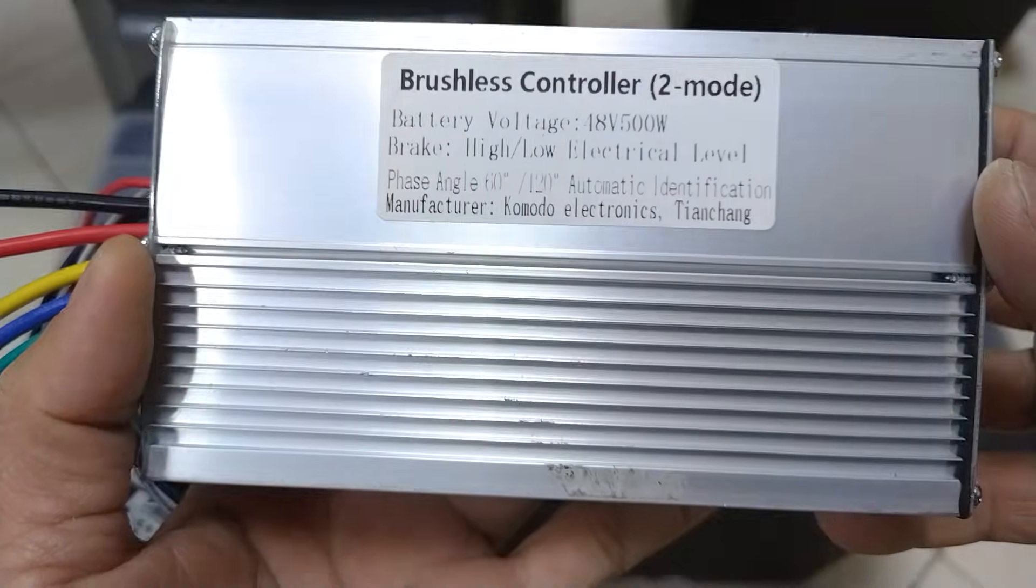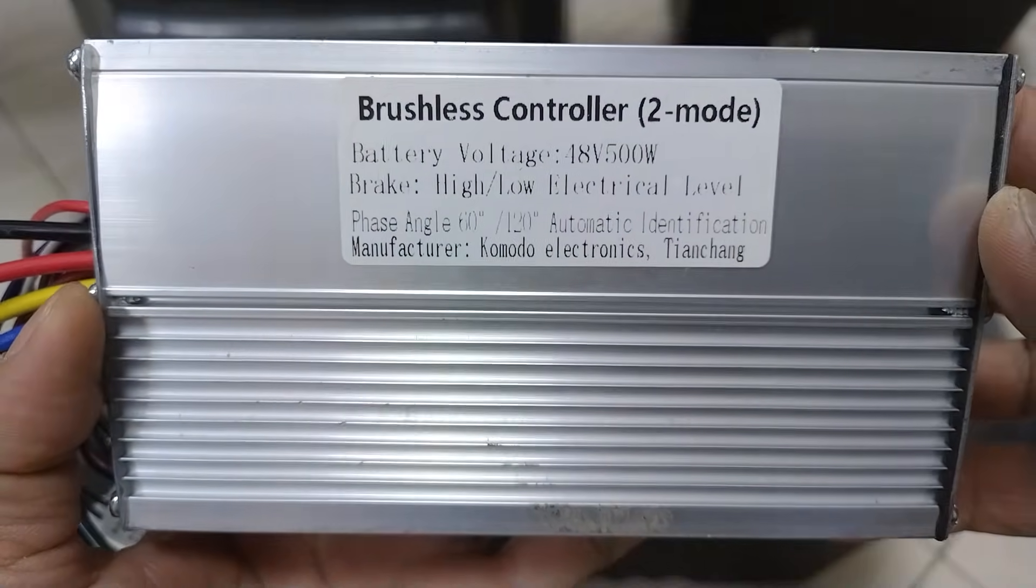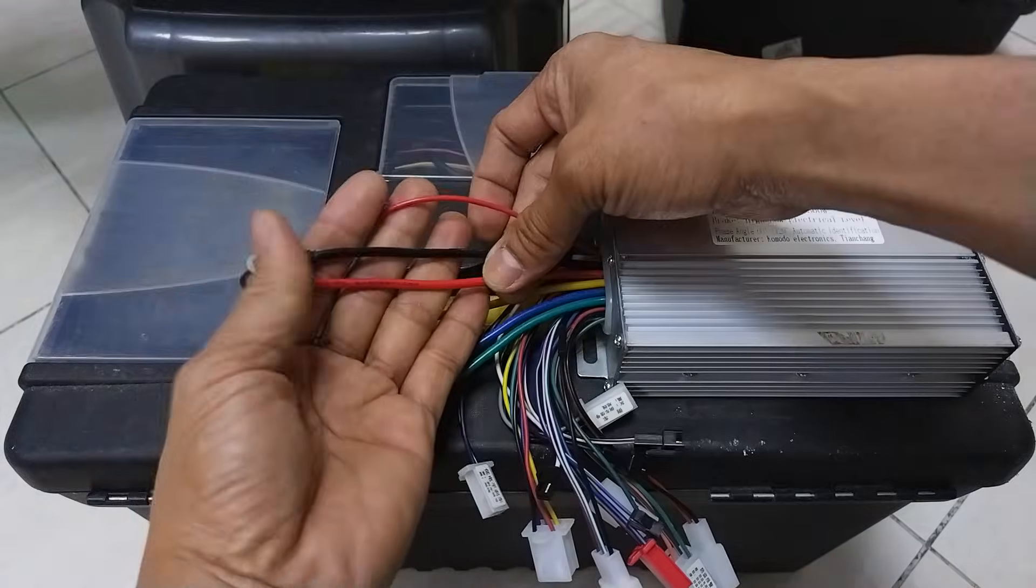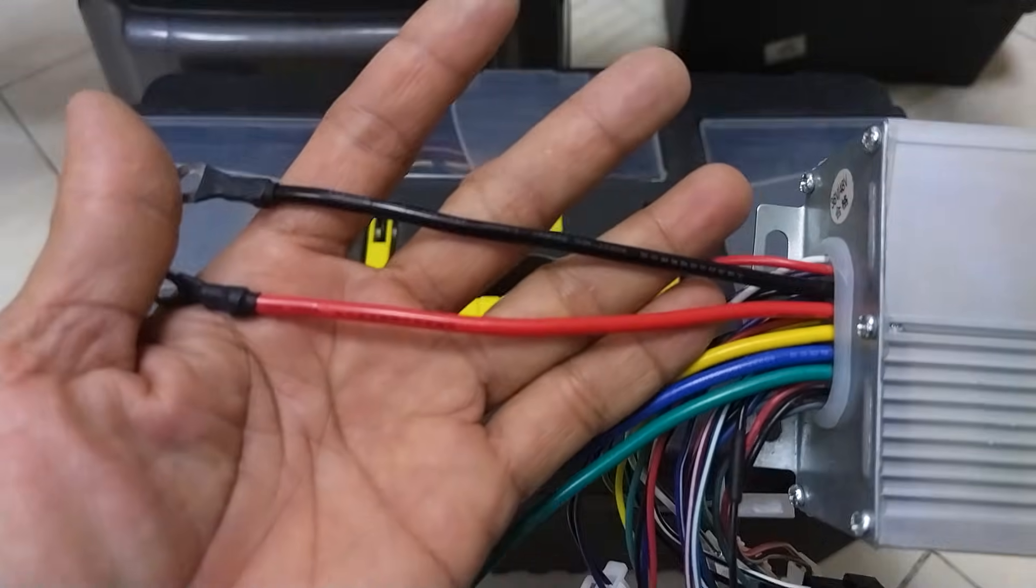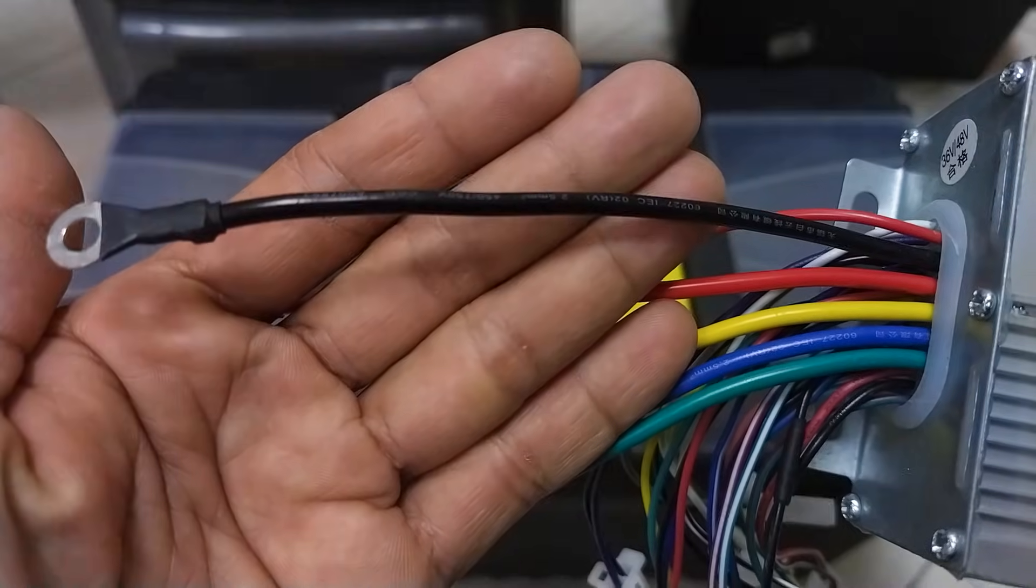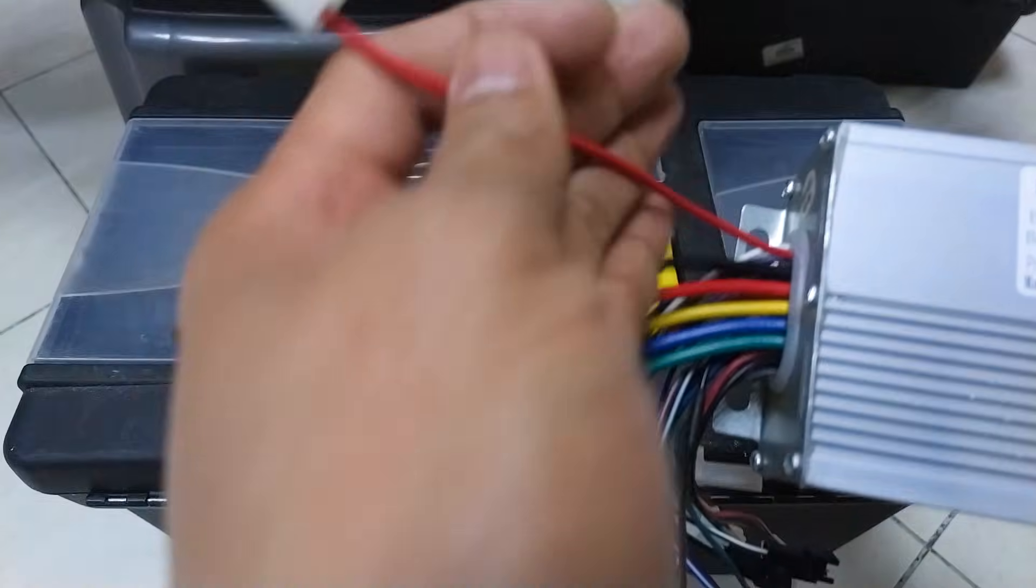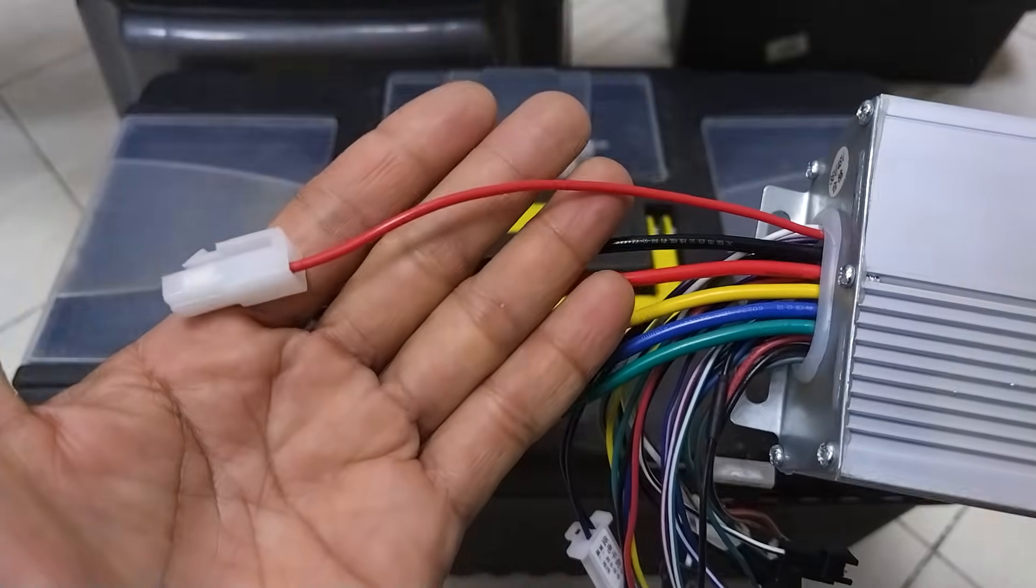I will be using a 48V 500W brushless controller for this tutorial. There are three important wires to supply power into the controller. The two thick wires, black and red, are for the battery or power source. Black wire is the negative line, red wire is the positive line, and the small red wire is the switch wire, also known as lock wire.